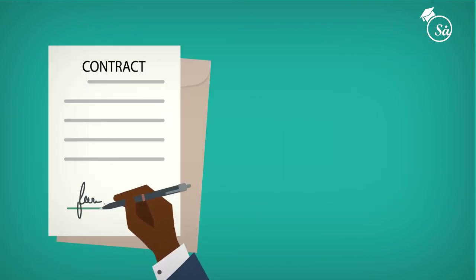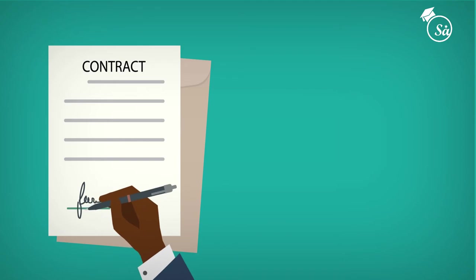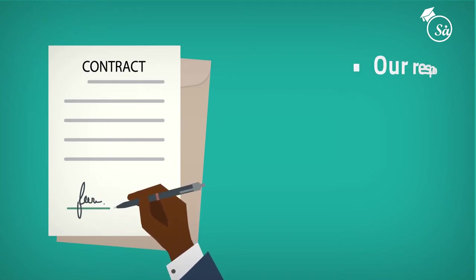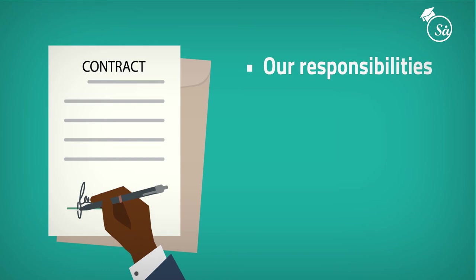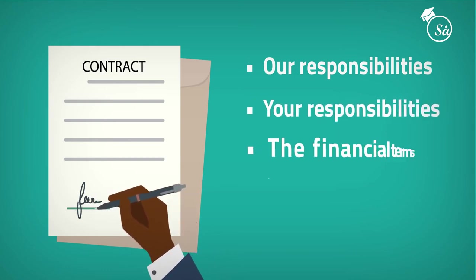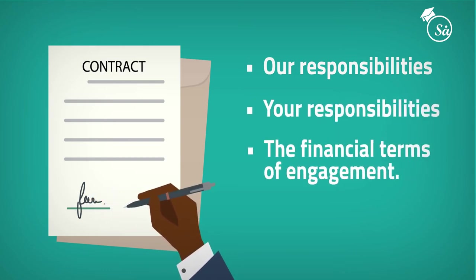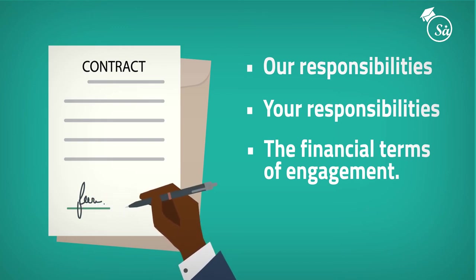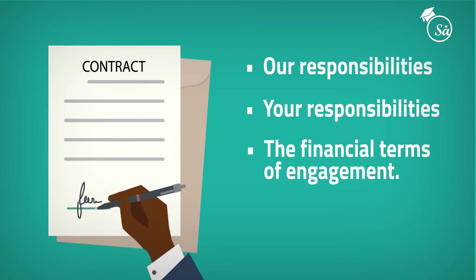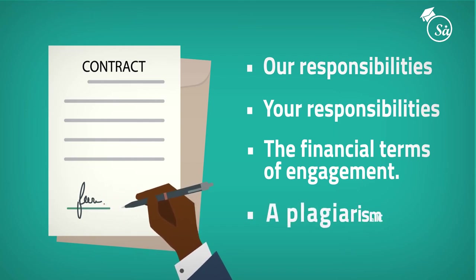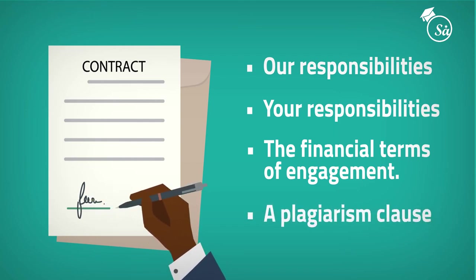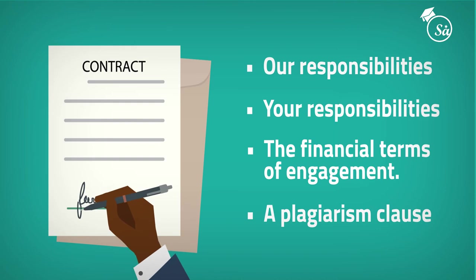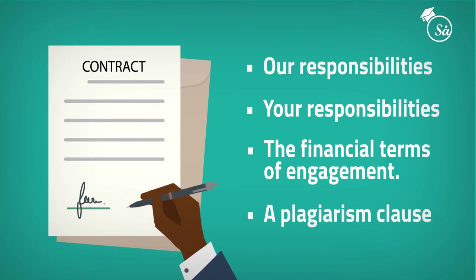Once we are in consensus with the course, we proceed to send you the contract agreement. This will state, amongst other things, our responsibilities, your responsibilities, and the financial terms of engagement. We may state the price here or hold on till the course is complete and we have a better idea of the work that went in as well as the depth of knowledge. There is also a plagiarism clause that you must sign, which states that your courses truly belong to you — this is a big deal for us.